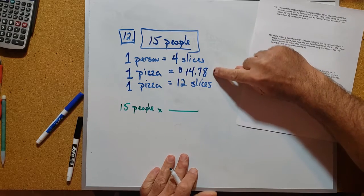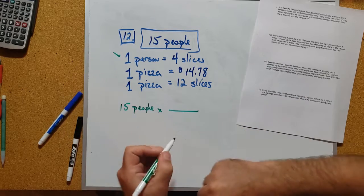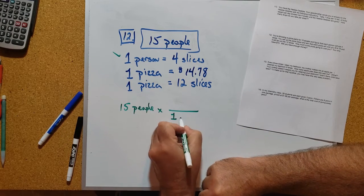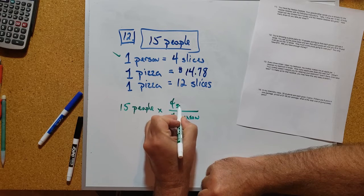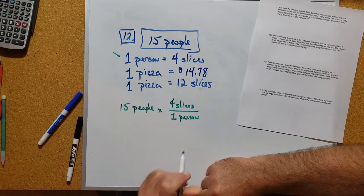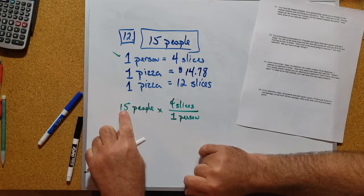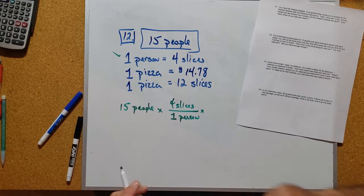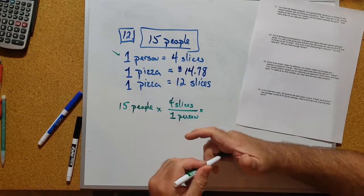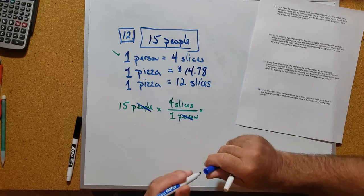Which one of these conversion factors has persons or people in it? It's this first one right here. Every one person is going to be four slices, and this is exactly what I mentioned earlier - to get the total number of slices we had to multiply 15 times 4, and we see that happening right here. We can cancel people or persons out and we're left with slices.